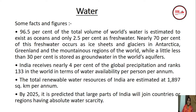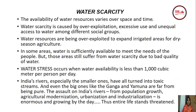Water scarcity means the availability of water resources varies across space — meaning geographical area — and time. Water scarcity is caused by over-exploitation, excessive use, and unequal access to water among different social groups. Water resources are being over-exploited to expand irrigated areas for dry-season agriculture. In some areas, water is sufficiently available but people still suffer from water scarcity due to the bad quality of water.